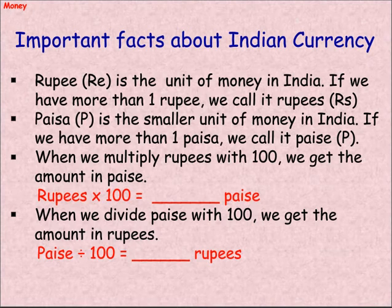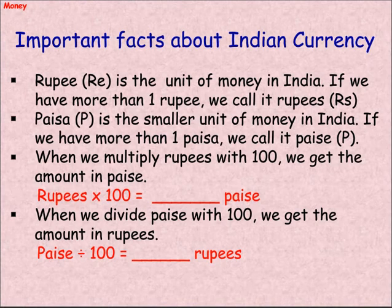Paise (P) is the smaller unit of money in India. If we have more than 1 paise, we call it paise. When we multiply rupees with 100, we get the amount in paise. When we divide paise by 100, we get the amount in rupees.